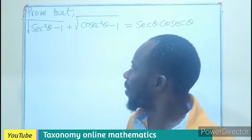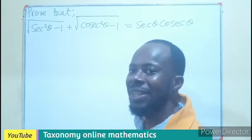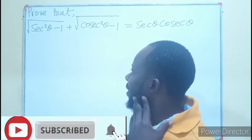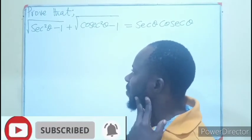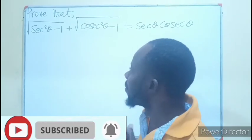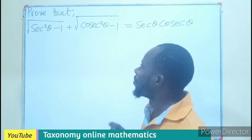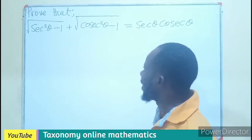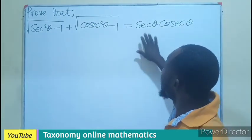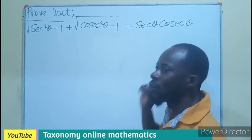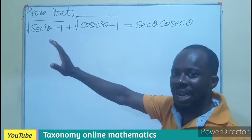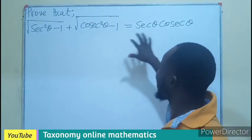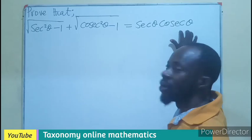Hello, welcome. We have a question to prove. It's coming from a friend on the channel. So we are to prove that the square root of sec squared theta minus 1 plus the square root of cosec squared theta minus 1 is equal to sec times cosec. So we are going to begin with the left-hand side to see whether we can prove that expression to be equal to this.